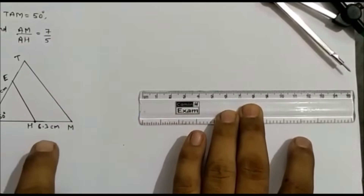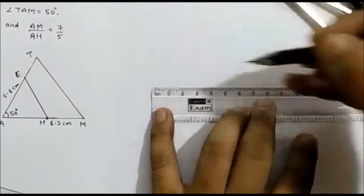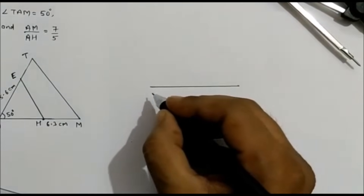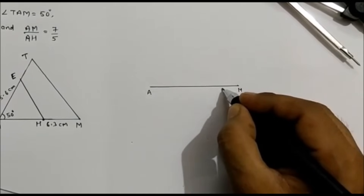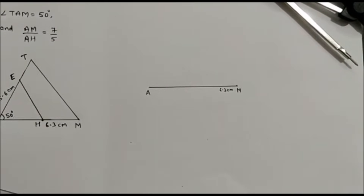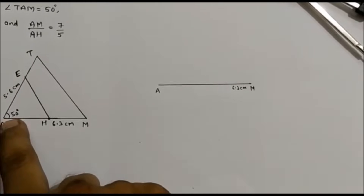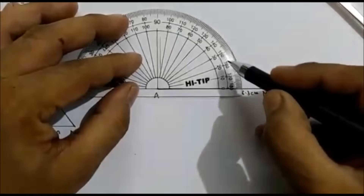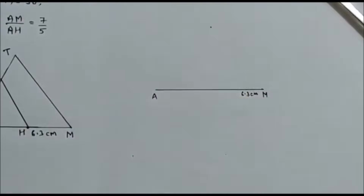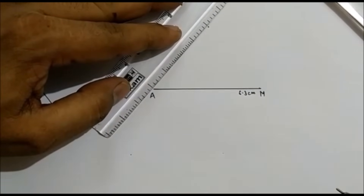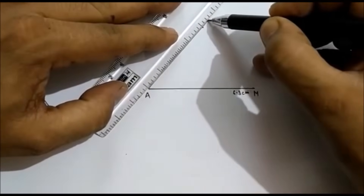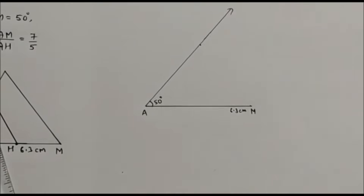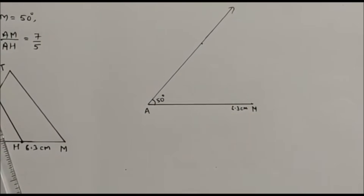Now let us see the construction. We will draw the base AM = 6.3 cm — this is 6.3 cm. Then take the protractor and draw an angle of 50 degrees at point A. You can see this is 40 and this is 50. The angle is 50 degrees.